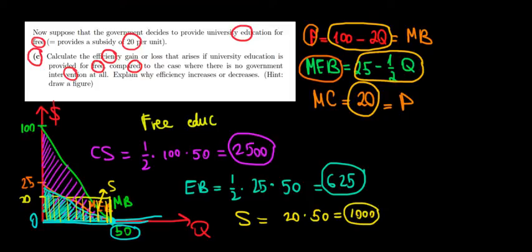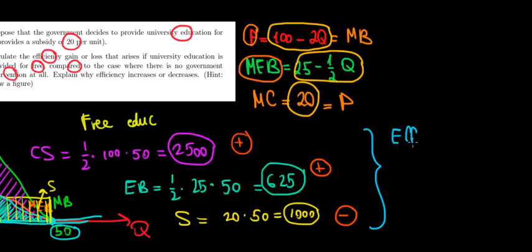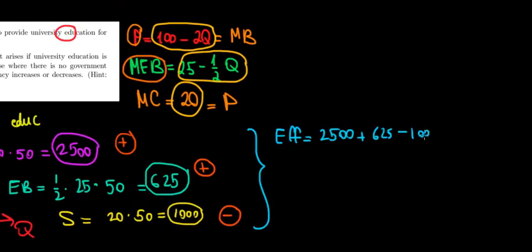Let's put here some pluses and minuses to show what we gain, what we lose. This is positive, positive and negative. We have efficiency equal to the benefit of $2,500 plus another benefit of $625 and a cost of $1,000 minus $1,000. If we work this out, that's equal to an efficiency of $2,125.